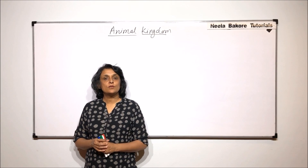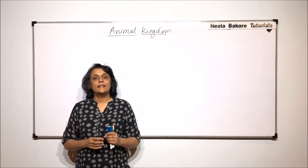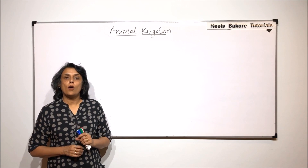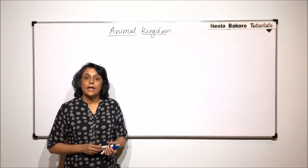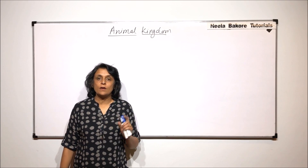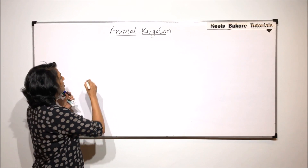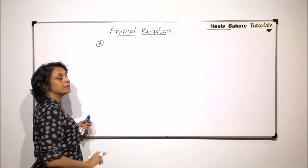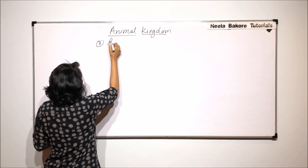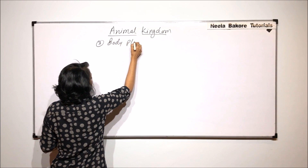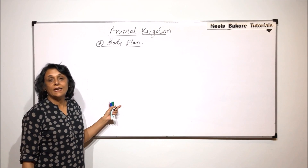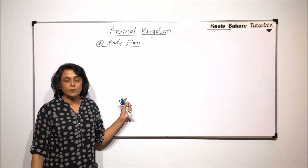In this part, we will try to see the diversity or the variations which we see in Animal Kingdom on some more parameters. In the previous part, we have seen the diversity on two parameters. Let us talk about one more parameter, that is the body plan. We have seen on the basis of habitat and the levels of organization in the previous video.